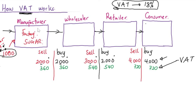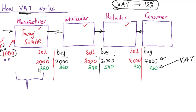We are assuming the manufacturer, wholesaler, and retailer are all VAT registered. Final consumers are not VAT registered — there is a criteria to be VAT registered which I'll cover in later videos. For the manufacturer, to calculate VAT liability: VAT on sales minus VAT on purchases. The manufacturer never purchased anything with VAT because they got raw materials from their own gardens or estates, so there was no VAT on purchases. They charged 360 VAT on sales, so 360 minus zero equals 360 — they pay 360 to URA (Uganda Revenue Authority).